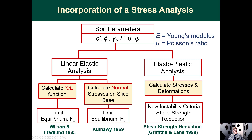On the right-hand side, there is the possibility of doing an elastoplastic analysis to calculate the stress state and deformations in our continuum. This gives rise to the shear strength reduction procedure, where you need a new instability criterion to assess when you have converged on the right solution. I refer to the work of Griffiths and Lane, though I recognize many others have also contributed to the shear strength reduction formulation.